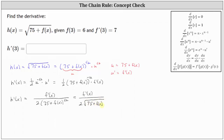Now we can determine h prime of three by substituting three for x. h prime of three is equal to f prime of three divided by the product of two and the square root of the quantity 75 plus f of three. From here, f prime of three is seven, and f of three is equal to six.